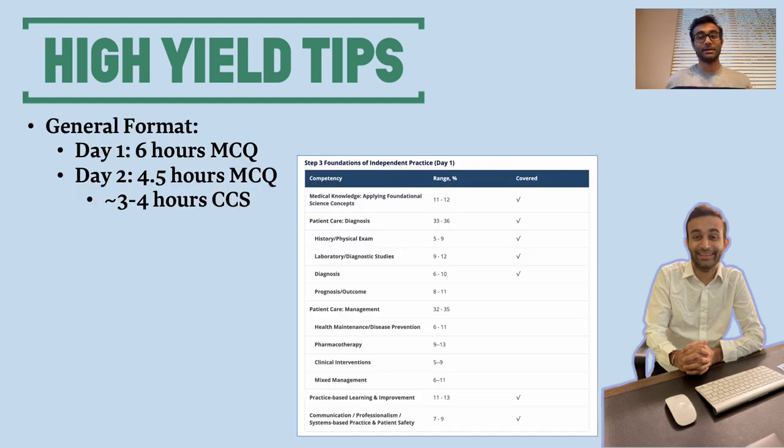The first format is the fact that this is a two-day exam. The first day has six hours of multiple-choice questions. The second day has four and a half hours of multiple-choice questions, as well as three to four hours of additional CCS cases. So this is very different from Step 1 and 2, which were purely multiple-choice questions. Step 3 has multiple-choice questions as well as these things called CASES, which are intended to help gauge how well you are able to approach an open-ended complaint that a patient might have.